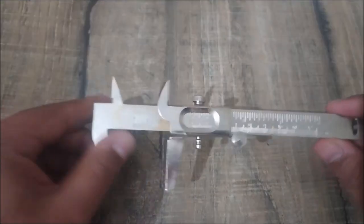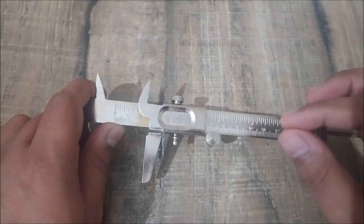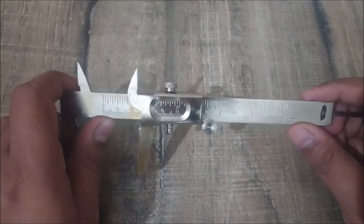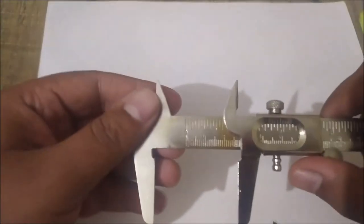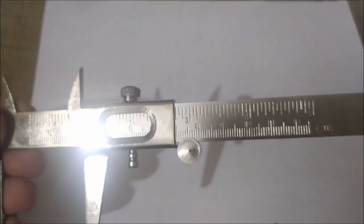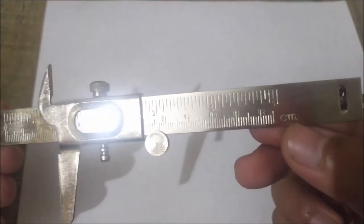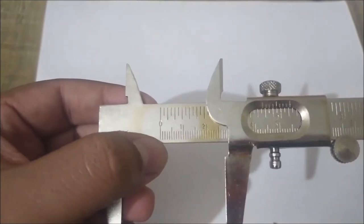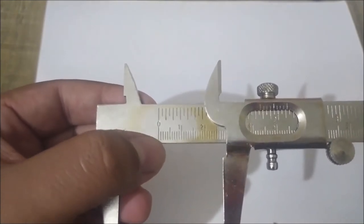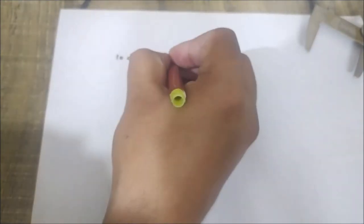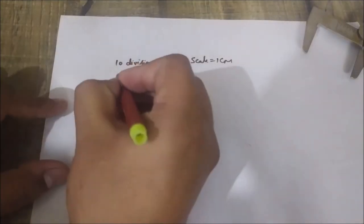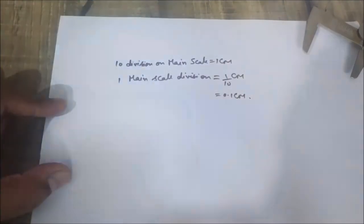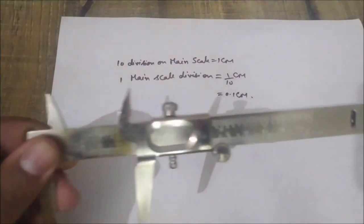After discussing the introduction, let's find out the least count of this Vernier caliper. Least count is the smallest reading that a device is capable to measure. This main scale has the same divisions like your ruler — it is in centimeters, and between 0 and 1 there are 10 divisions. So 10 divisions on the main scale equals 1 centimeter, meaning 1 division equals 1 upon 10 centimeter, or 0.1 centimeter.